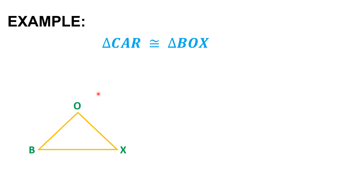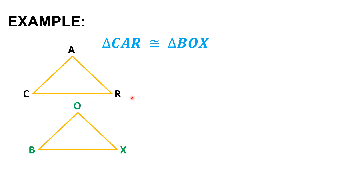Let's have one last example. Triangle CAR is congruent to triangle BOX. Since the symbol used is congruency, we find the congruent corresponding angles and corresponding sides. When drawing triangle CAR, make sure it is the same size and shape as triangle BOX — like a copy-paste, just with different labels: C-A-R and B-O-X.